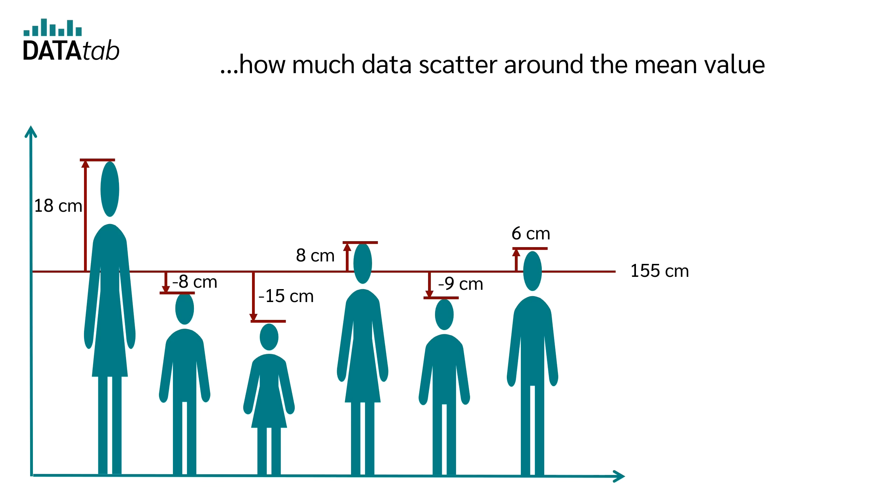But we want to get a positive value every time, no matter if the person is bigger or smaller than the mean. Therefore, we square the difference. For the first person we have 18 times 18, which is 324. For the second person we have minus 8 times minus 8, which is 64.